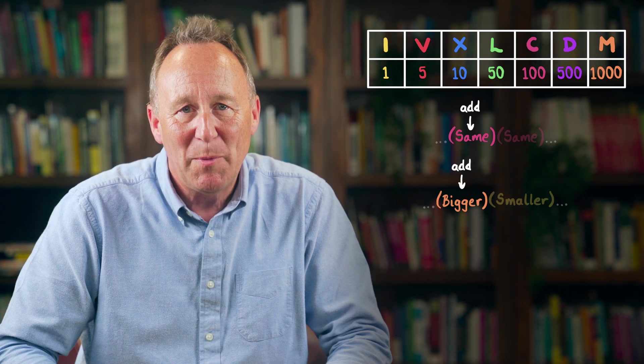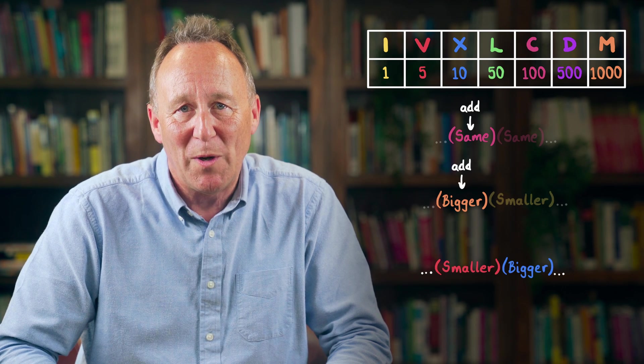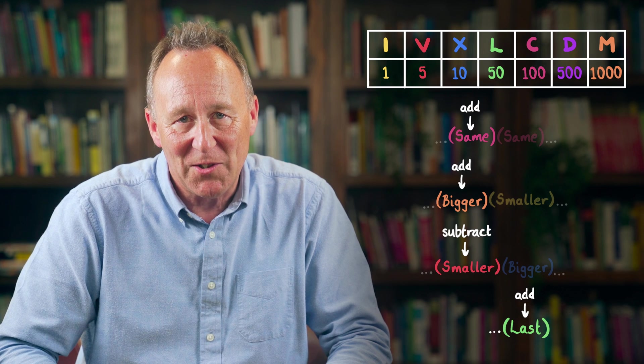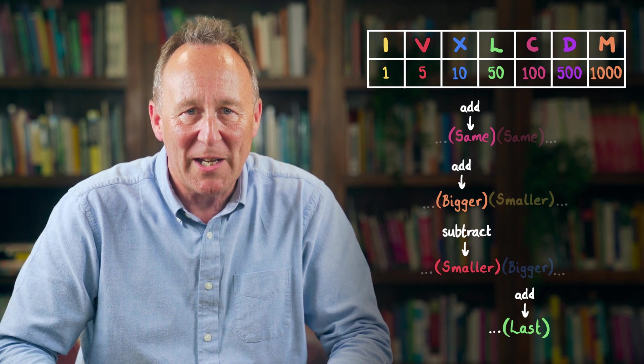Next, we need to know that to convert a number written using Roman numerals to its Hindu-Arabic equivalent, we work from left to right through each letter, adding or subtracting the values they represent. If a letter comes before one of the same or lower value, then we add it. But if it's just before one of a higher value, then we subtract it. And the last letter, we always add.